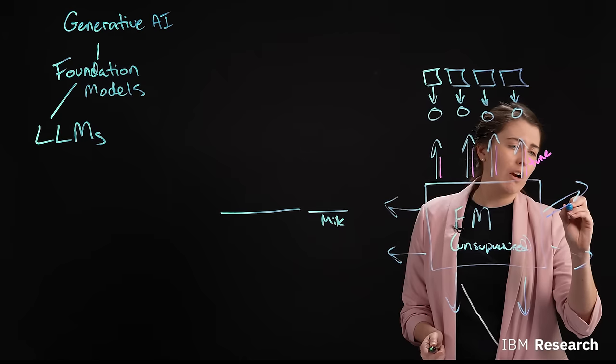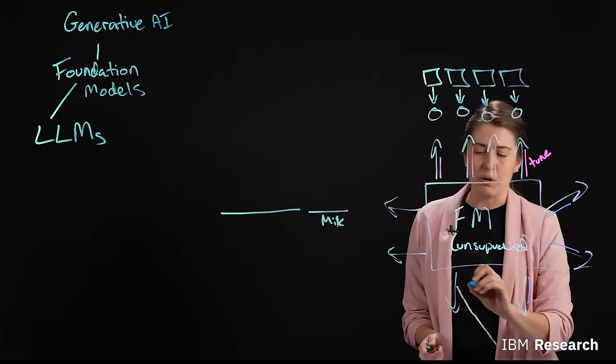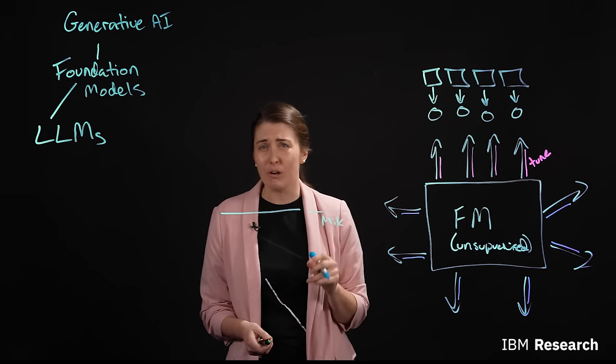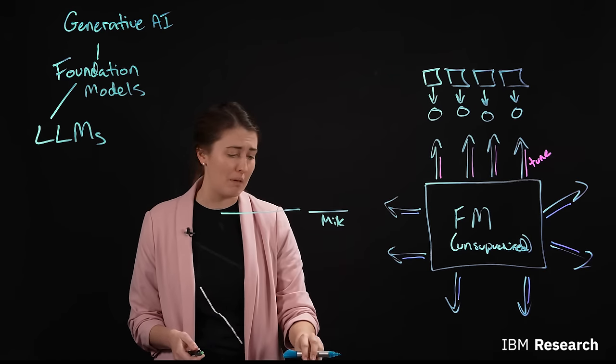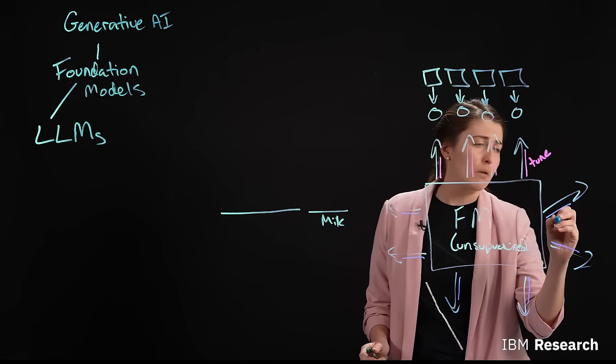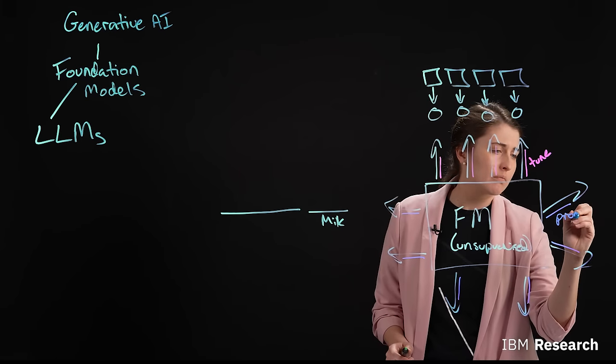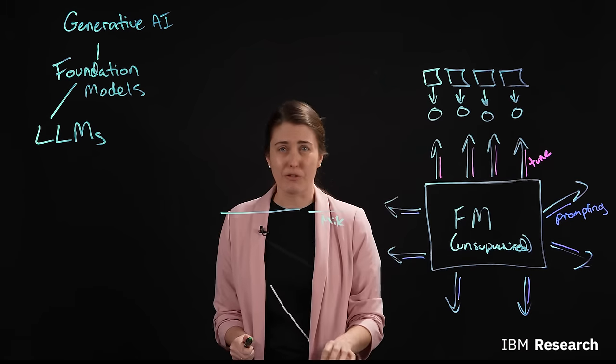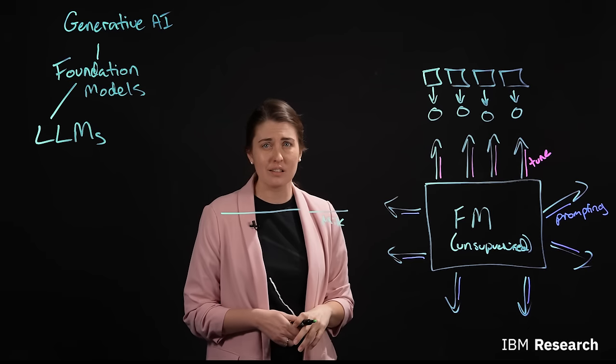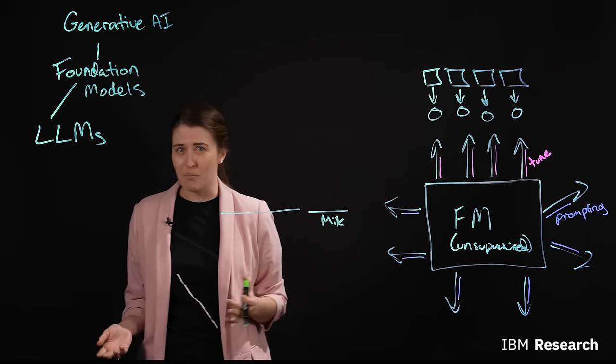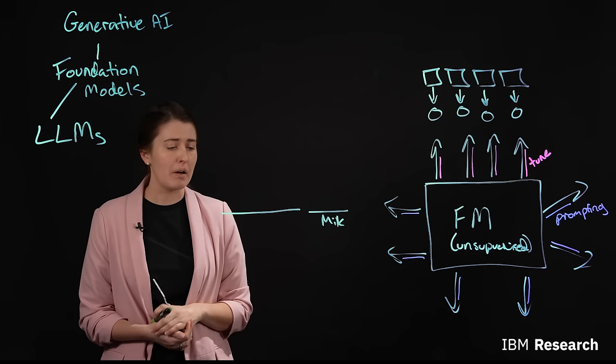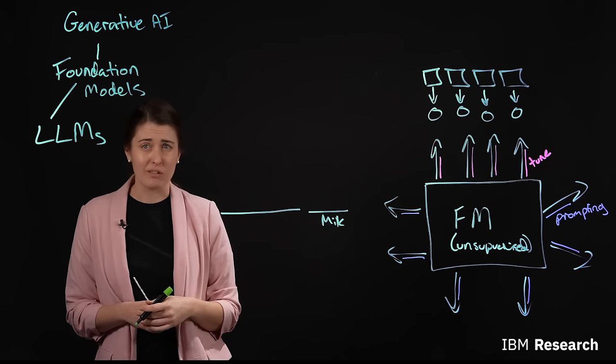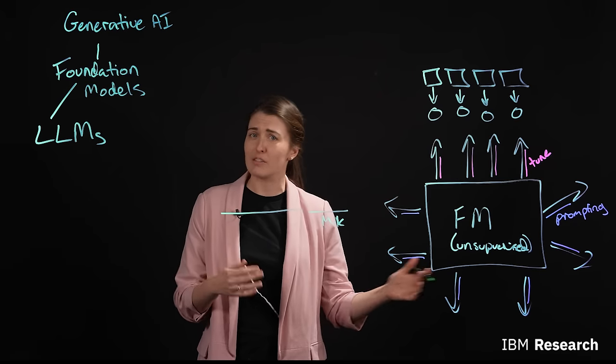If you don't have data, or have only very few data points, you can still take these foundation models, and they actually work very well in low-label data domains. And in a process called prompting or prompt engineering, you can apply these models for some of those same exact tasks. So an example of prompting a model to perform a classification task might be, you could give a model a sentence, and then ask it a question.